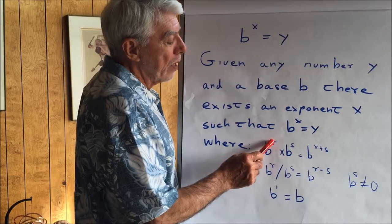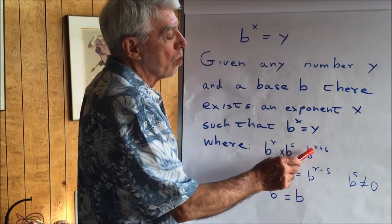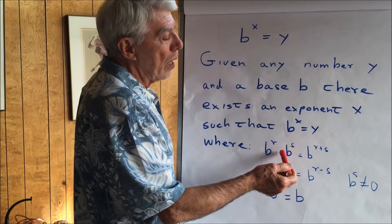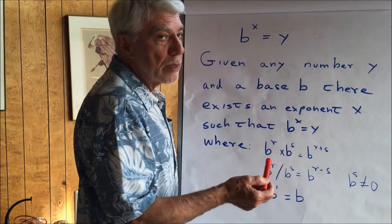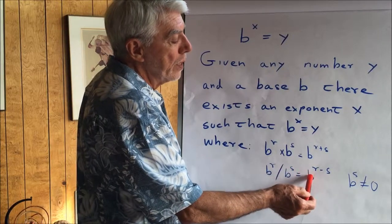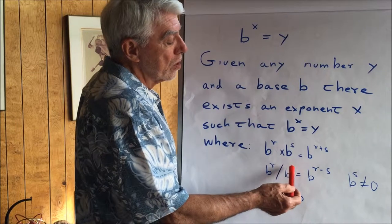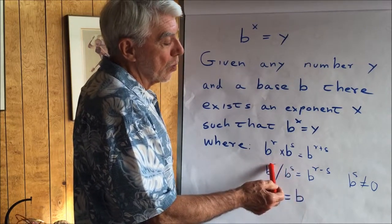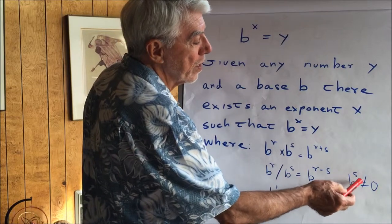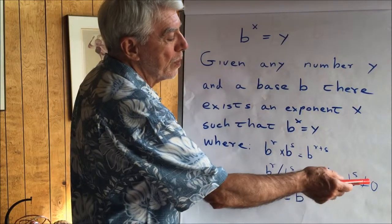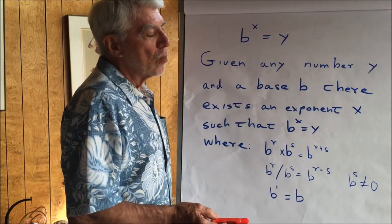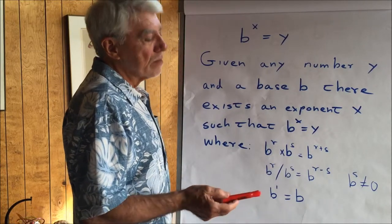B raised to the r power times b raised to the s power equals b raised to the r plus s — meaning that numbers with exponents, when multiplied, you add the exponents, assuming they have the same base. B to the r divided by b to the s is equal to b to the r minus s. The exponent of the denominator is subtracted from the exponent of the numerator. The denominator can't be zero — b to the s is unequal to zero. The only way it could equal zero is if the base were zero, and nobody raises zero to powers because it's meaningless.